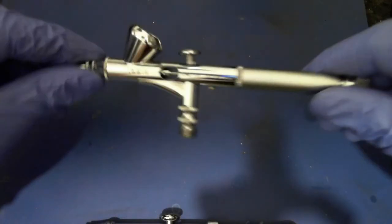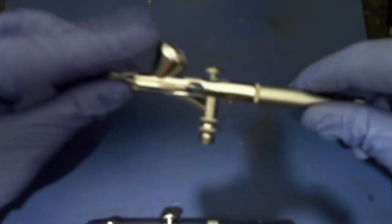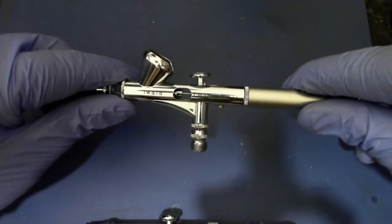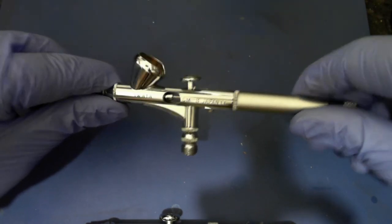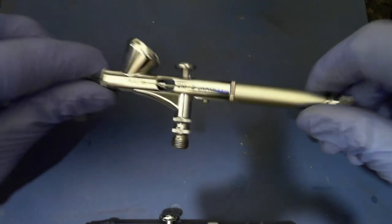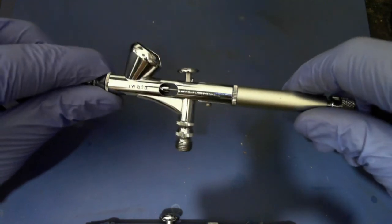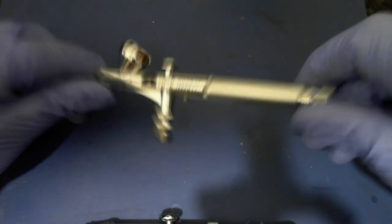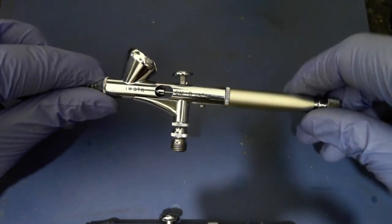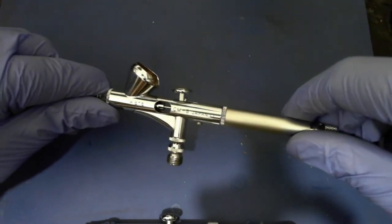The first is the gravity feed system. This places the paint reservoir on the top of the airbrush and uses gravity to help pull the paint into the mix chamber. With this gravity assist, the airbrush does not need as much suction, and therefore lower pressure can be used. Because of this, the airbrush can be designed for finer atomization, which generally results in much finer detail work possible.